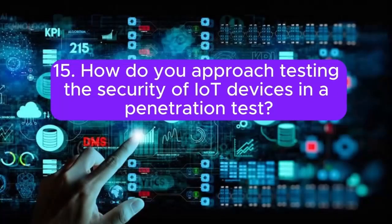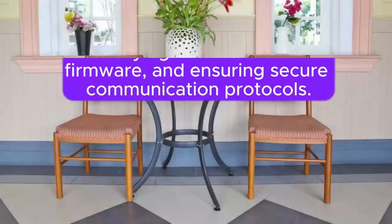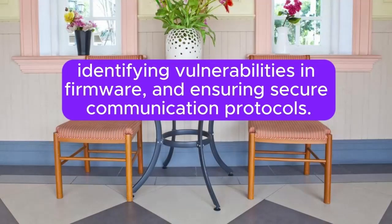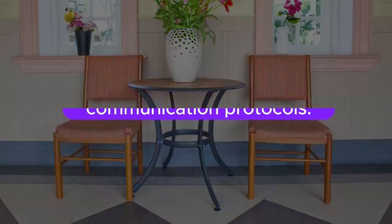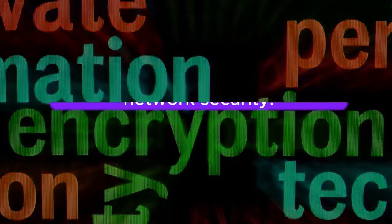Question 15: How do you approach testing the security of IoT devices in a penetration test? Answer: Assessing IoT devices involves checking for default credentials, analyzing network traffic, identifying vulnerabilities in firmware, and ensuring secure communication protocols. Testers evaluate both device and network security.